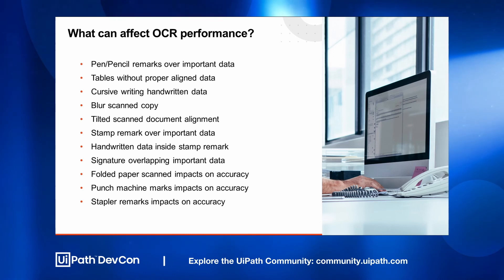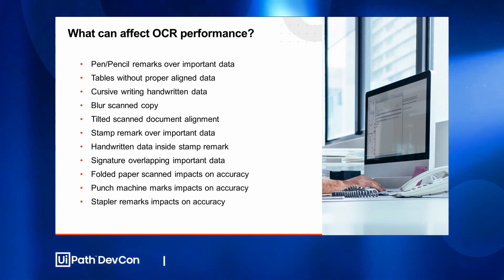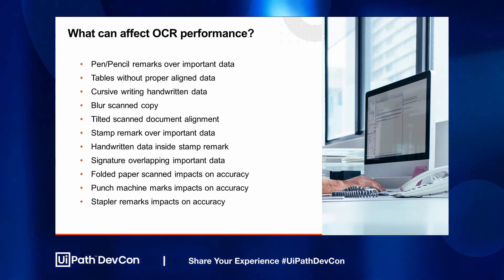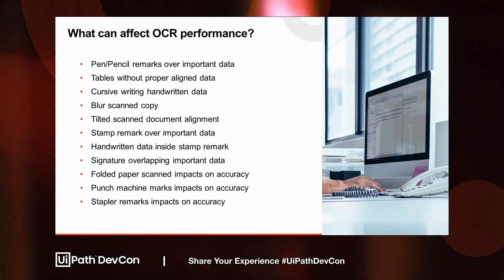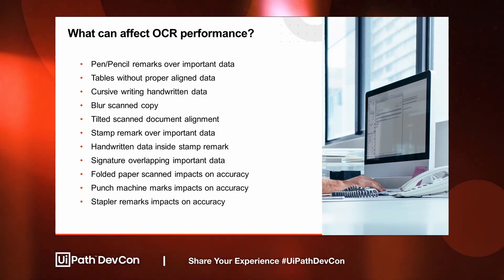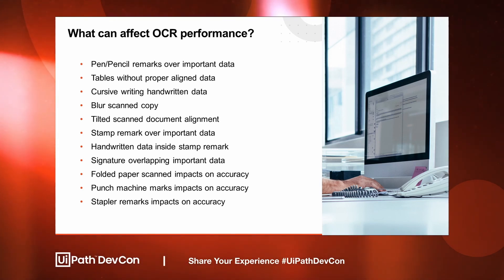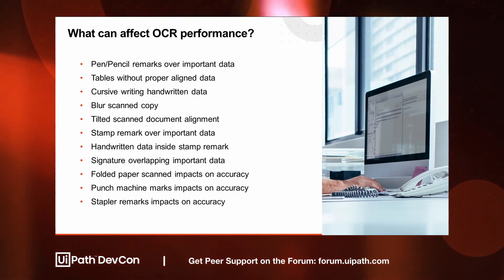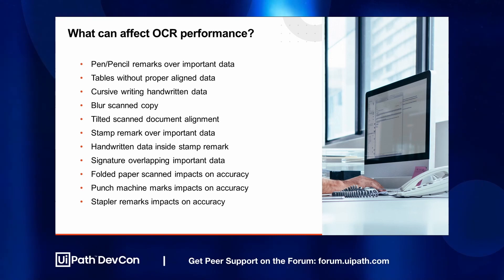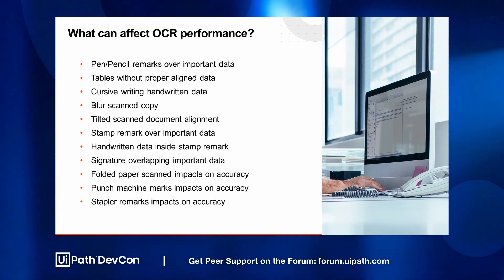There are many factors which might affect OCR extraction quality. These include intensive remarks over important data, tables without proper alignment of data, cursive writing which is still not good enough for OCR, blurred scan copies, tilted scan documents as seen with Microsoft and Tesseract failures, stamped remarks over important data, signatures overlapping important data, coated paper stamp impacts on accuracy, punch machine remarks on the paper, and stapler remarks which impact accuracy significantly.